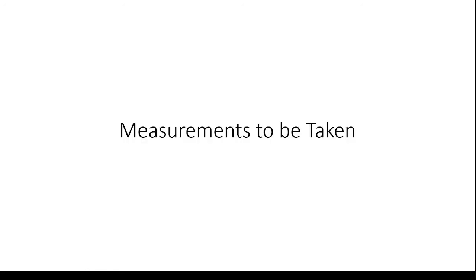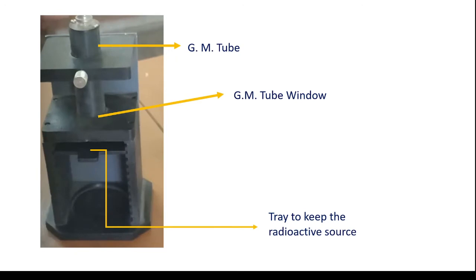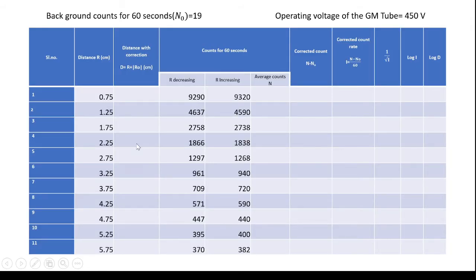Now the measurements to be taken. One of the important measurement which you have to do is basically the R which is going to be called as the distance. This I am taking from this point up to the top of the radioactive source. And this R value is kept on changing by keeping the tray at various slots. The slots you can see it here. This is the data which I have collected where R is the distance to various slots which are shown here and the corresponding counts as R increases and R decreases are shown here.